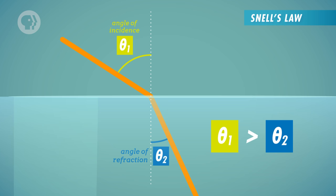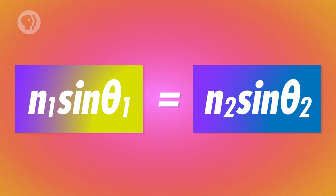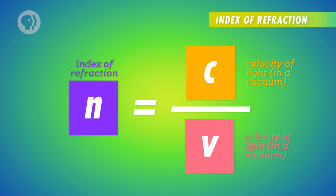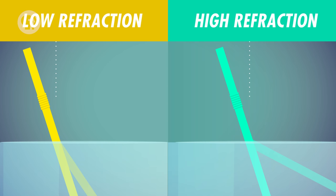Snell's law says that the angles of refraction are determined by the index of refraction for each medium and the angle of incidence. The index of refraction for a certain medium is the ratio of the speed of light in a vacuum versus the speed in that medium. And when a ray enters a medium with an increased index of refraction, the angle of refraction decreases. In other words, the higher the index of refraction, the smaller the angle.